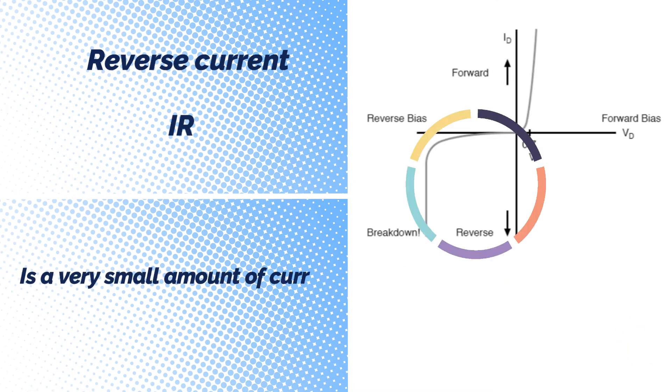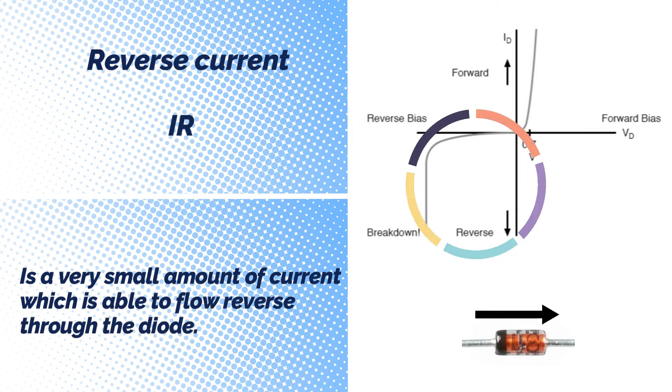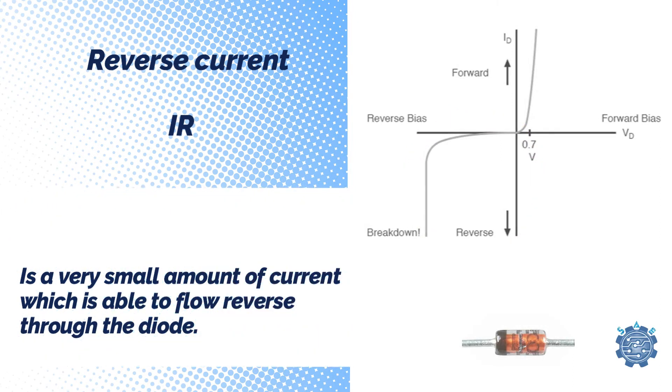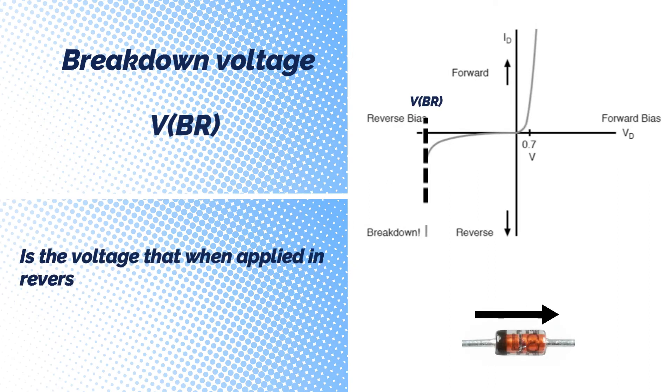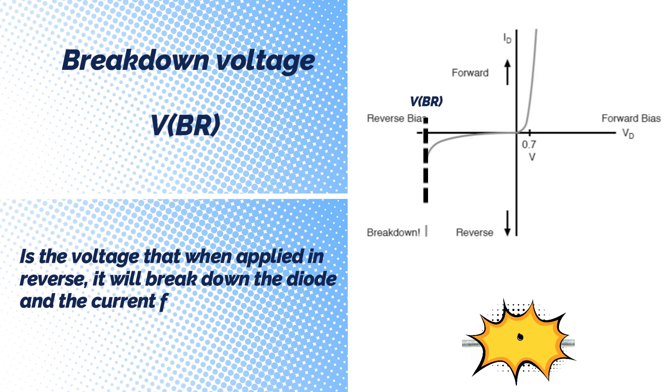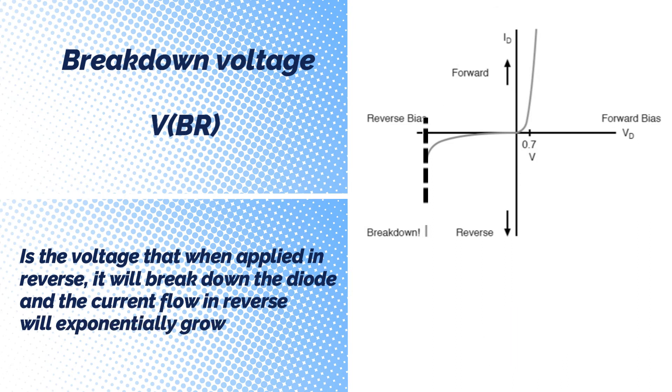Reverse Current is a very small amount of current which is able to flow in reverse through the diode. Breakdown Voltage is the voltage that when applied in reverse will break down the diode and the current flow in reverse will exponentially grow.